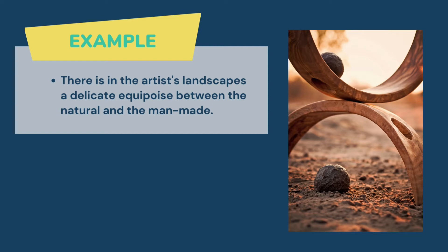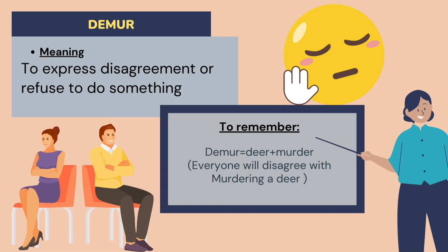Our next word is 'demure.' Demure means to express disagreement or refuse to do something — to object to something, to show protest against something, or to denounce something.